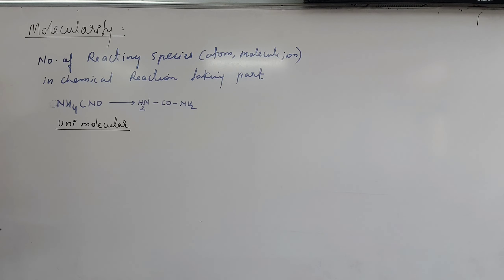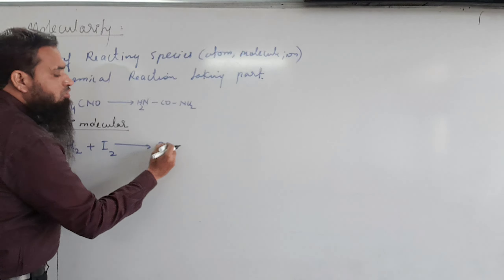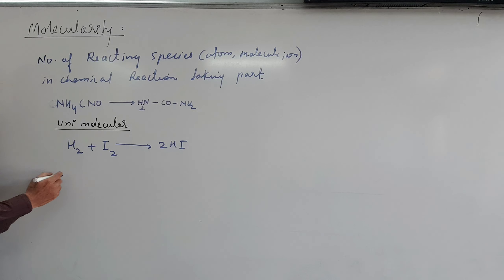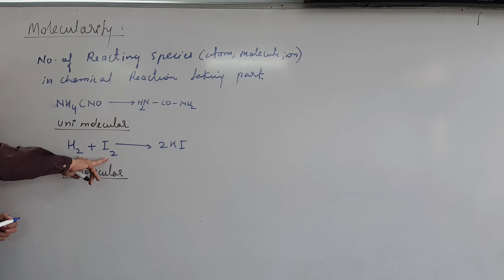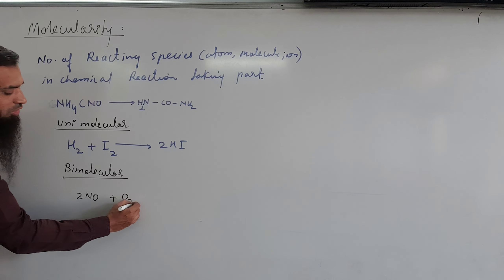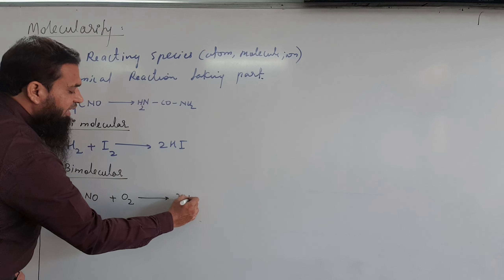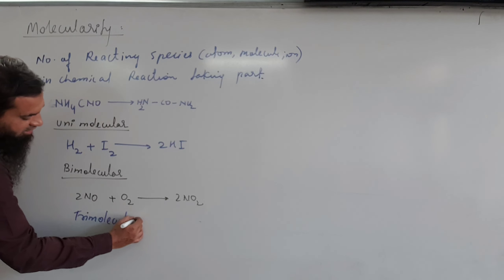Another example: H2 + I2 → 2HI — this is a bimolecular reaction, because two different types of molecules are taking part. Another example: 2NO + O2 → 2NO2 — so this is a trimolecular reaction.